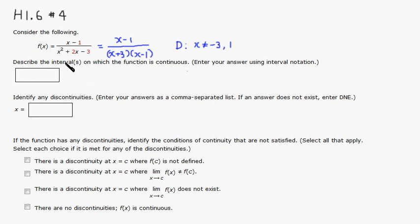So interval notation would be negative infinity to negative 3, skip negative 3, then go to 1, skip 1, then go to positive infinity. So that's the interval on which this function is continuous.